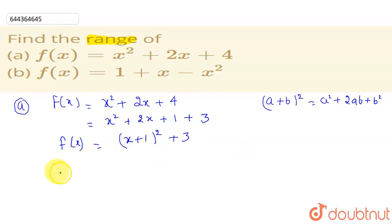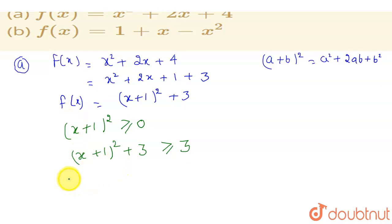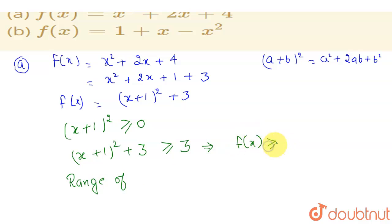This gives us f(x) = (x + 1)² + 3. Now, (x + 1)² is always greater than or equal to 0, equal to 0 when x = -1. Adding 3 to both sides, (x + 1)² + 3 will always be greater than or equal to 3. So the range of f(x) is [3, ∞), where 3 is included.